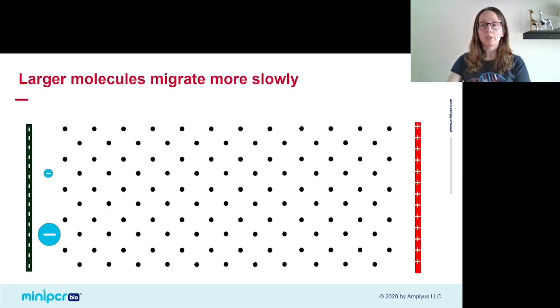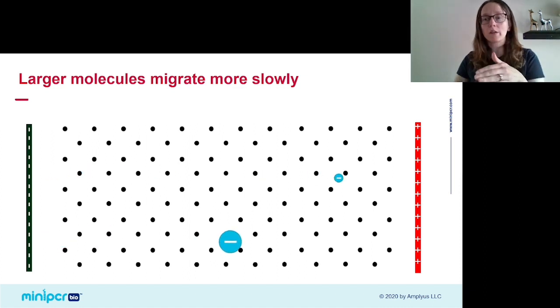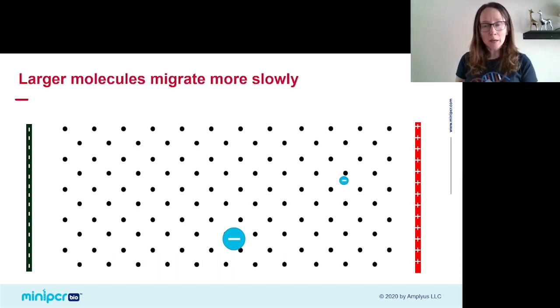On this slide, I've turned our gel on its side. The negative electrode is now on the left, and the positive one is on the right. We are zoomed way in so we can see the web-like structure that makes up our gel. Here are two DNA fragments, one large and one small. When we turn on our electric field, both DNA fragments will be attracted to the positive electrode, but the smaller one will be able to zip through the web inside the gel, where the big one is going to get hung up and move a lot slower.